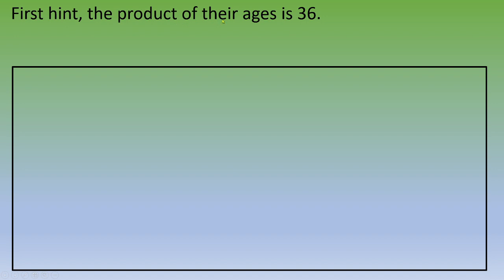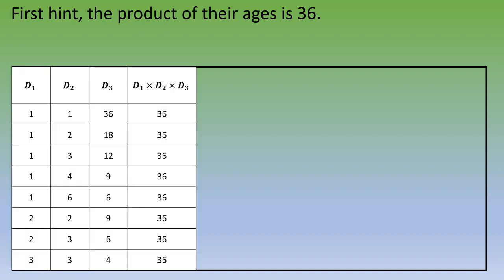The product of their ages is 36. In this table, D1 is the age of the first daughter, D2 is the age of the second daughter, and D3 is the age of the third daughter. And this fourth column is the multiplication D1 times D2 times D3.